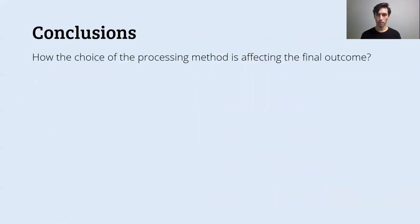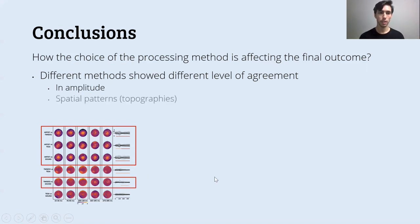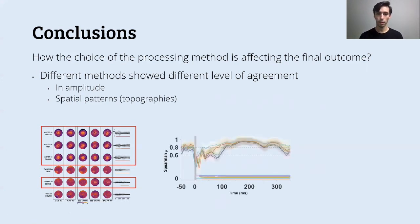The conclusion. So the initial question was how the choice of the preprocessing method is affecting the final outcome. And the answer is not straightforward, of course. Different methods showed different levels of agreement. We see it in amplitude that some methods, like ARTIST, showed a lot of differences, while others agreed more. For example, TMSEG and sound. We saw in the spatial patterns, like the correlation in topographies, was low in the beginning and it was variable in later latencies. And also for temporal patterns that we saw in the temporal correlations, we saw that for the whole epoch, the correlation was very high, but for initial latencies, the correlation was low, especially in the frontal areas.